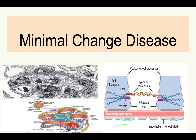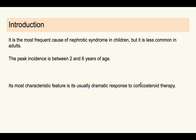Let's discuss minimal change disease. Minimal change disease is the most frequent cause of nephrotic syndrome in children. In nephrotic syndrome there is heavy proteinuria, as discussed in the previous video. Minimal change disease mostly occurs in children and is less common in adults, with a peak incidence between two to six years of age.